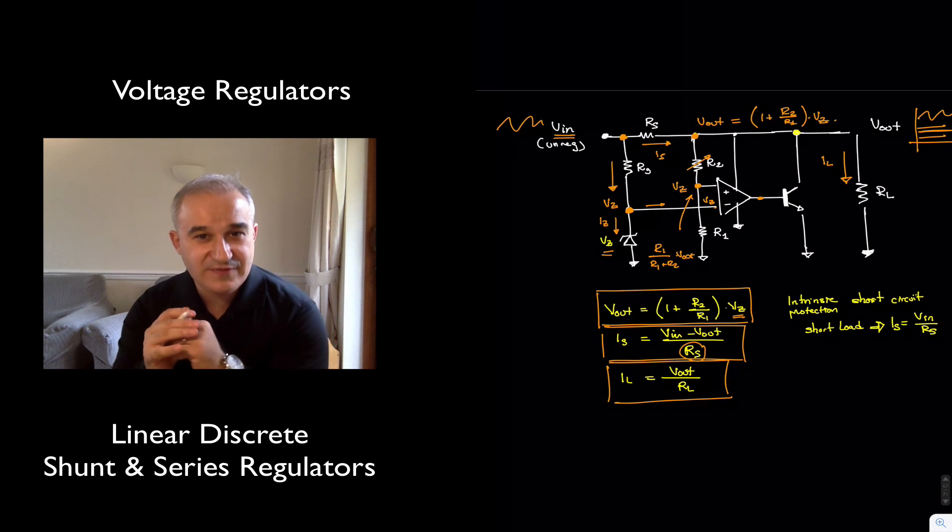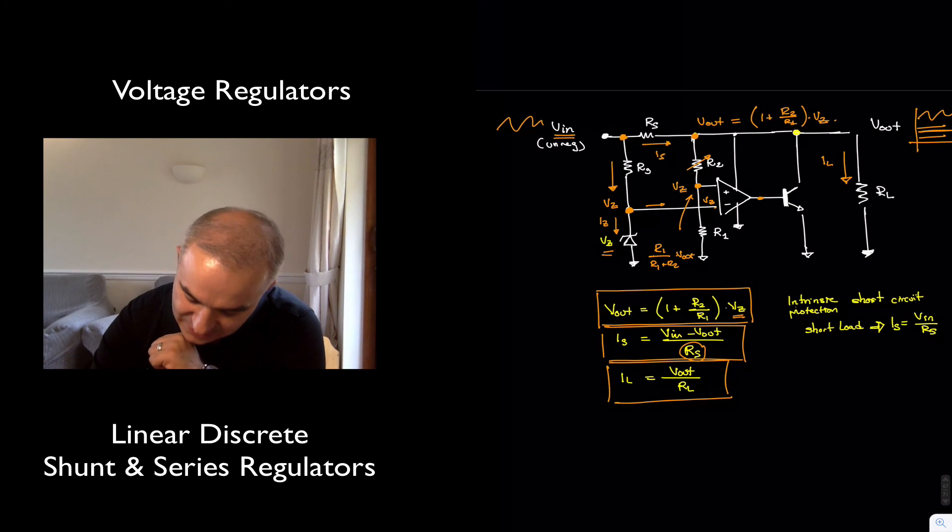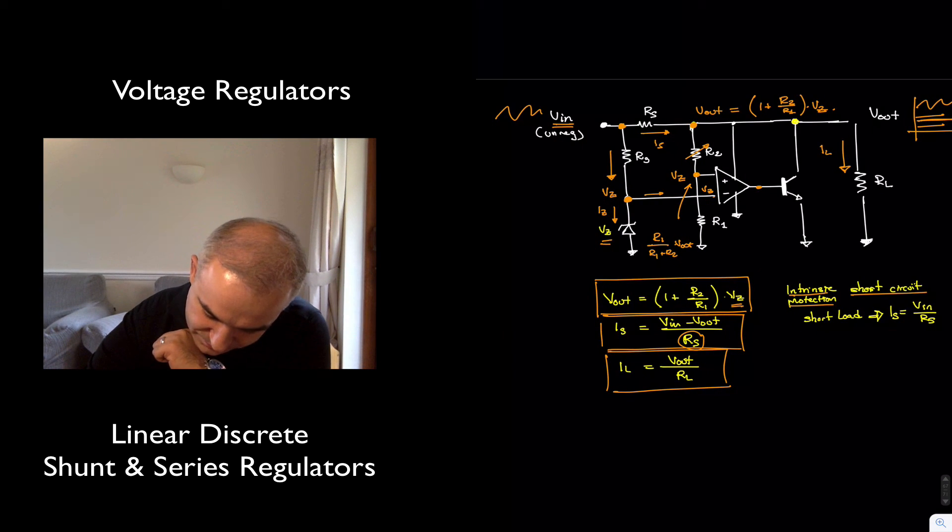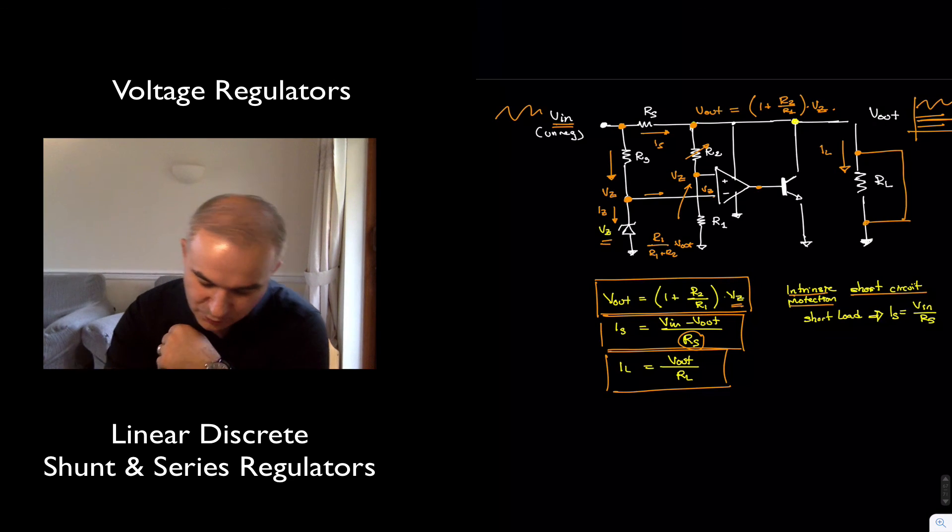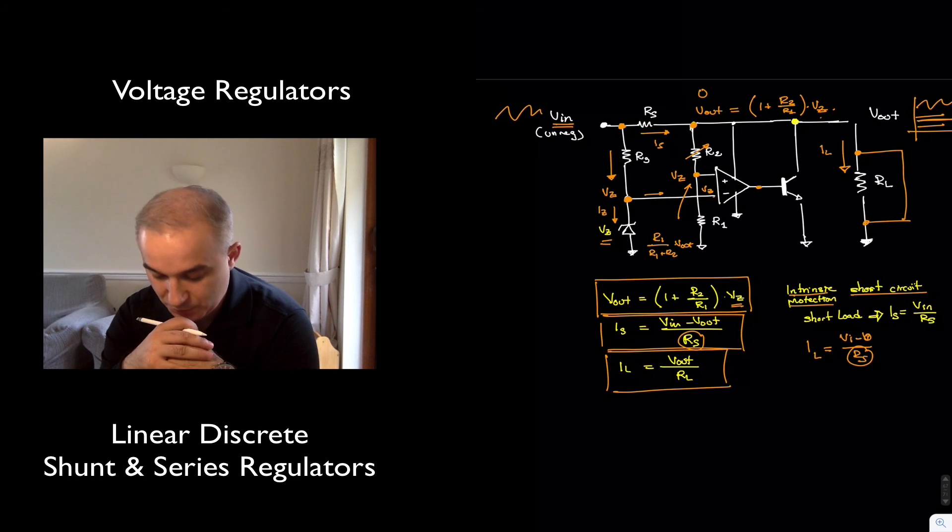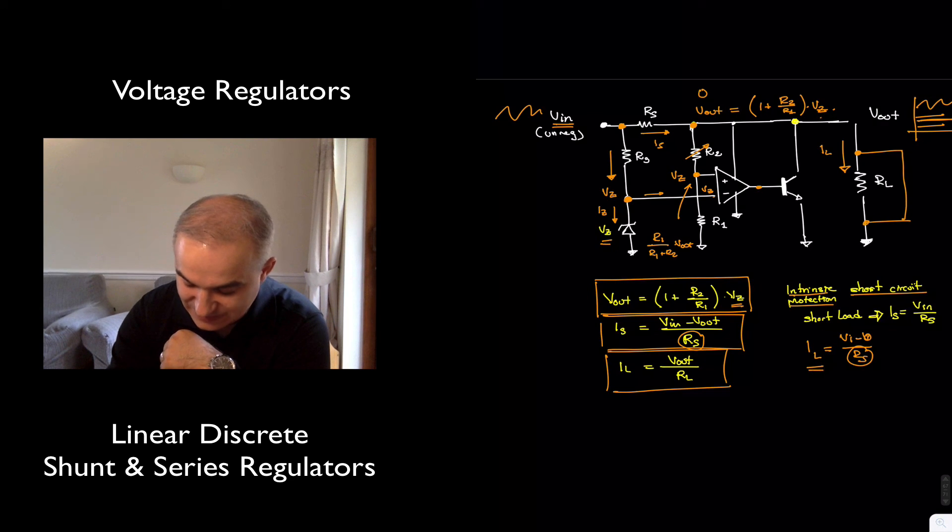Now, one advantage of this circuit is that it has intrinsic short circuit protection. What do we mean by that? If we were to short the output, like accidentally, we are not going to damage any components, and we are limiting the output current. What is the output current if we short this? Well, the output now will be equal to zero, and so the load current will be equal to V input minus zero divided by Rs. So, we can select Rs also to provide, based on the input, a maximum load current.